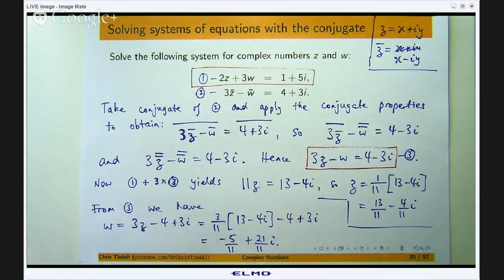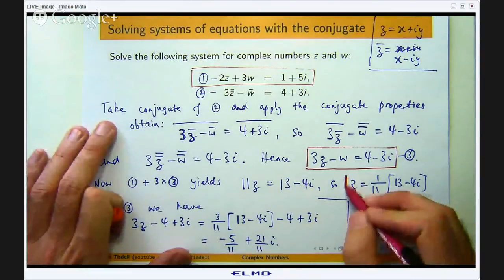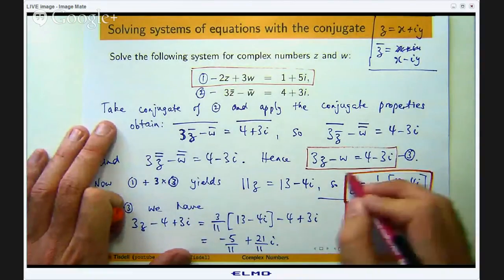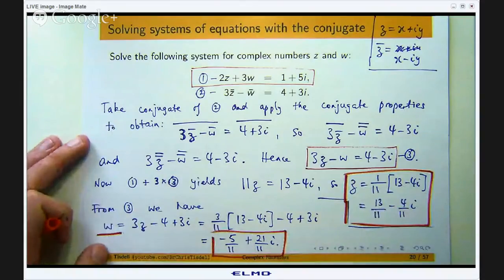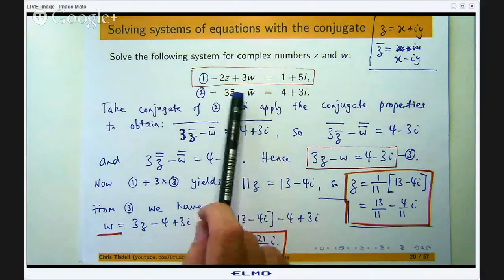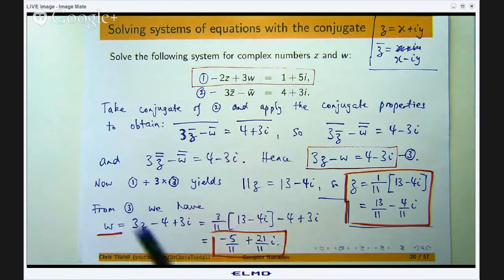Okay so here is our z and here is our w. Okay so as you can see it is not a difficult problem but if you did not know that you either had to take the conjugate of equation 2 and then simplify it is hard to start this problem.